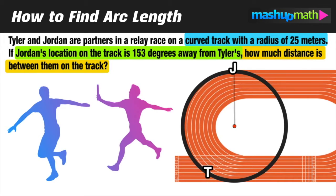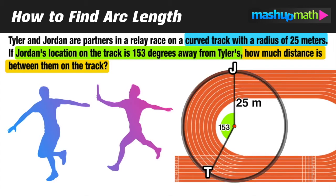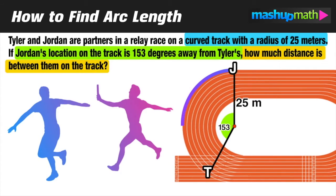Let's call Jordan's location J and Tyler's location T. We already know the radius of the curved portion of the track is 25 meters, and Jordan's location is 153 degrees away from Tyler's. It's important to visualize that Jordan is going to run on a curved path along the track until he reaches Tyler and hands off the relay baton. We don't want linear distance — we want curved distance.